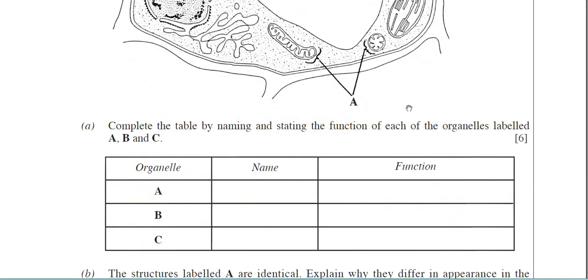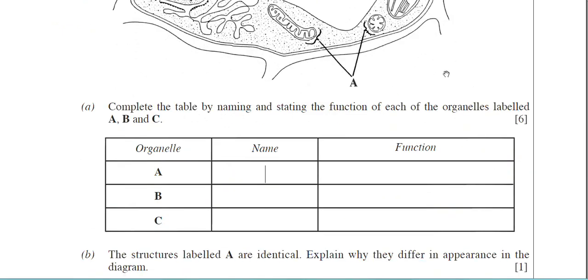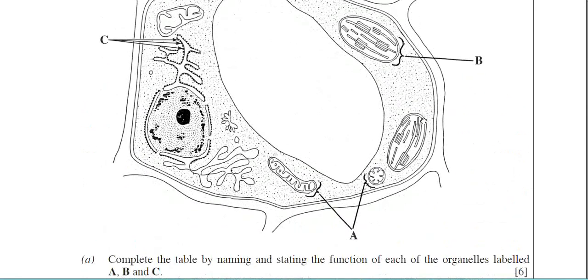Let's scroll down and answer part A. You're asked to complete the table by naming and stating the function of each of the organelles labelled A, B and C. So let's scroll up then. I can tell you that A, there is a mitochondrion or mitochondria. B, as I've already mentioned a moment ago, is the chloroplast. And C, now the examiner's been pretty good with this one.